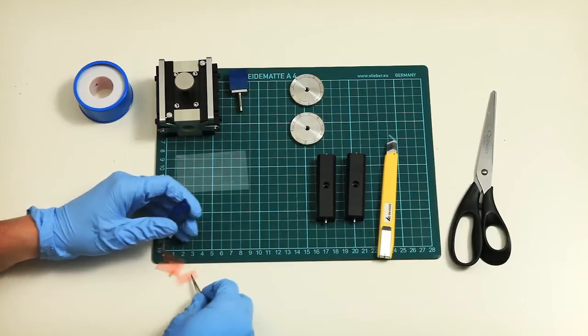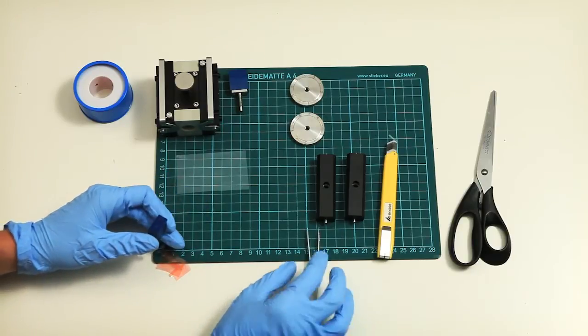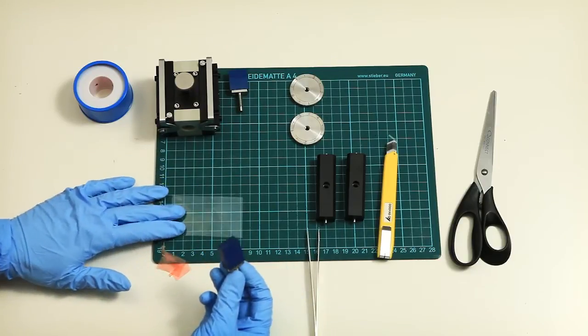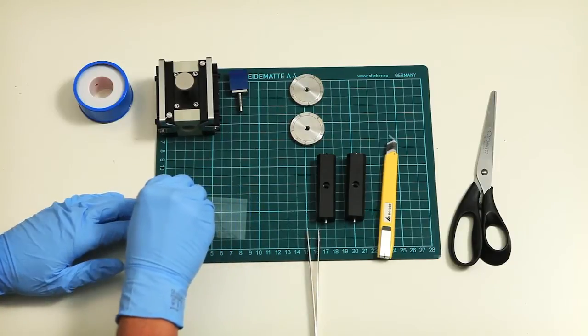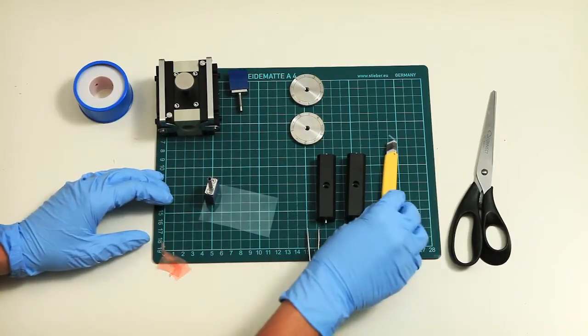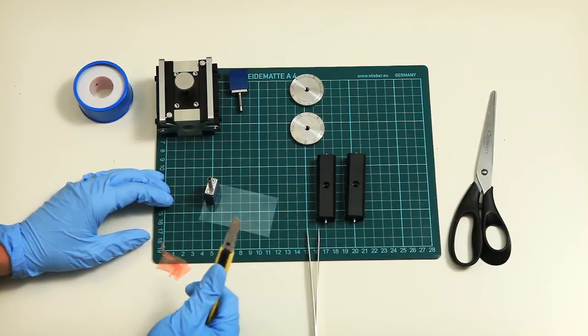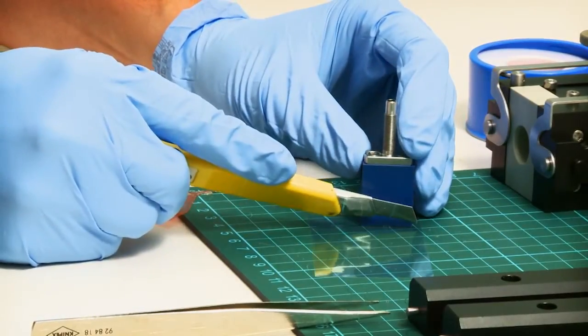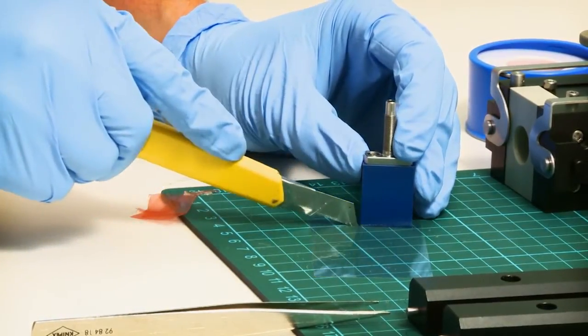Remove the tape's protective cover and place the sample holder on the rear side of your sample. This is our flexible polymer foil here. Remember, the side you want to measure must be at the bottom.